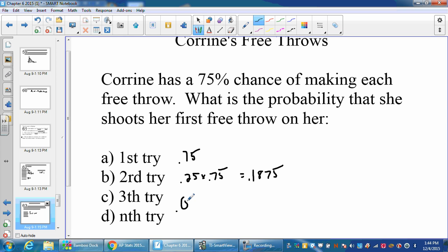The nth try would be 1 minus 0.75 to the n minus one, or 0.25 to the n minus one, and then times 0.75 at the nth.